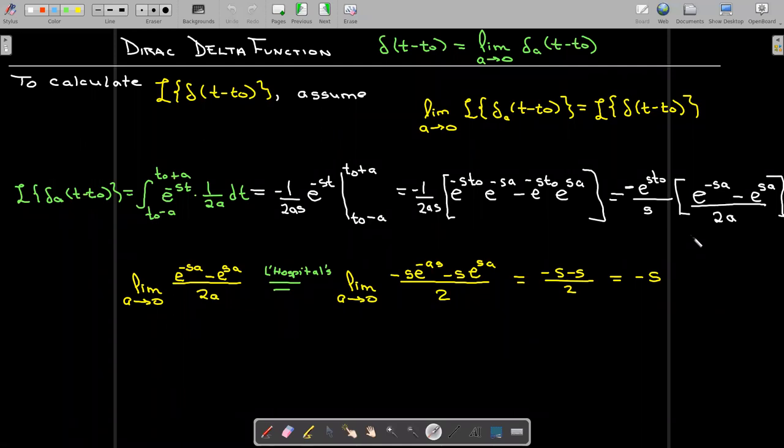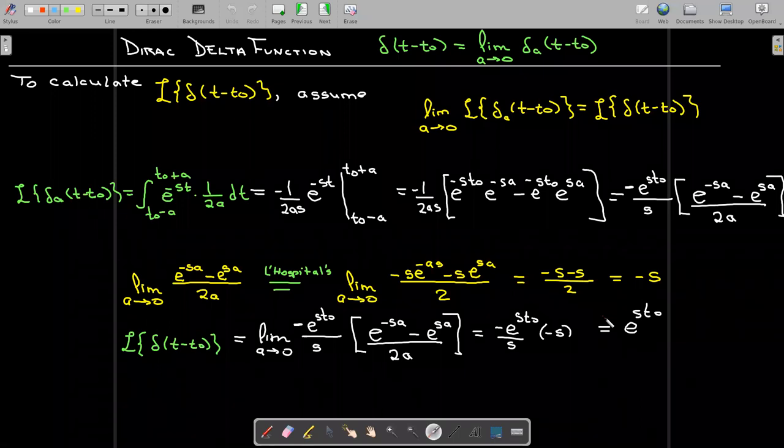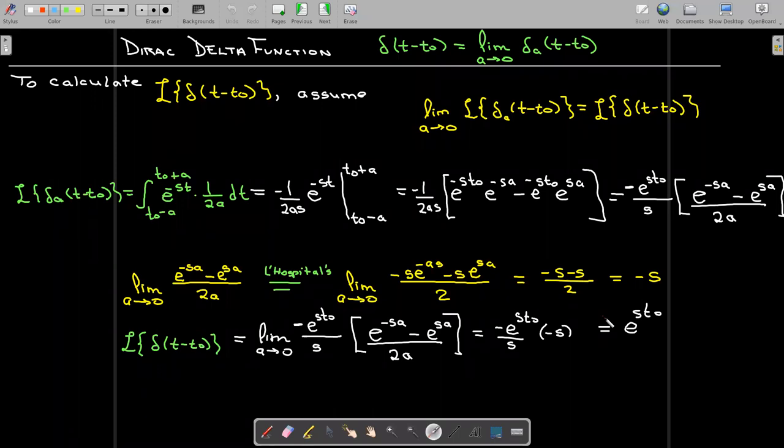Now again that's just the limit of this part. I still need to multiply by the constant out in front which is negative e to the power of s times t-naught all over s. And so then my minus times a minus will make a plus and the s's will divide out and I'm left with e to the power of negative s times t-naught. So that is the Laplace transform of the Dirac delta function.